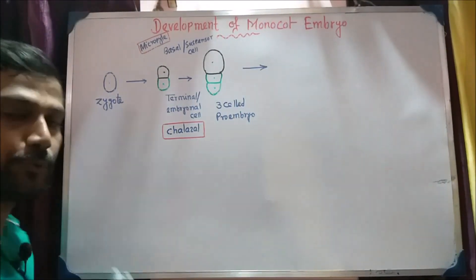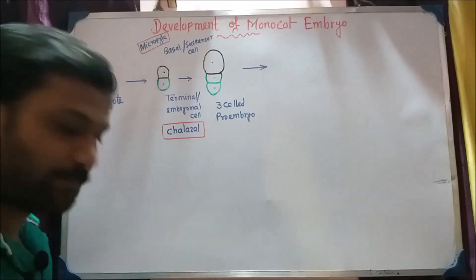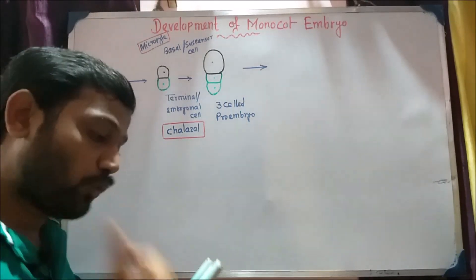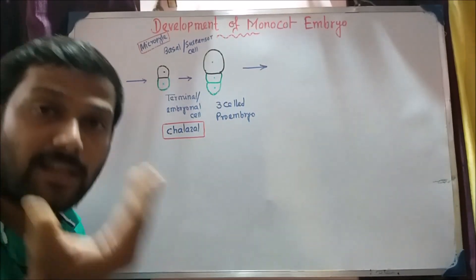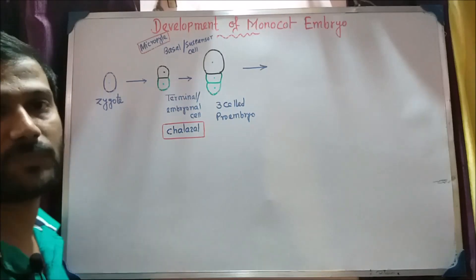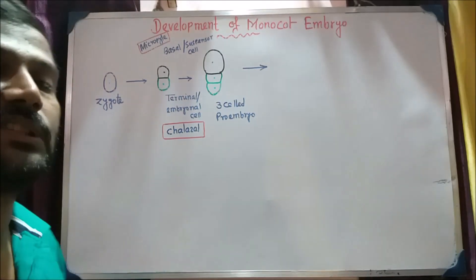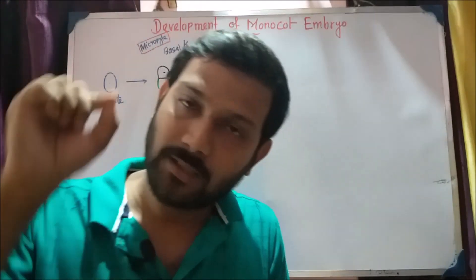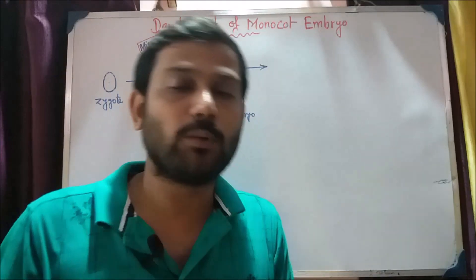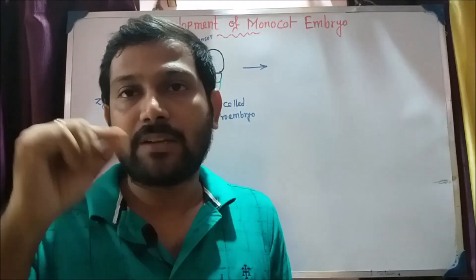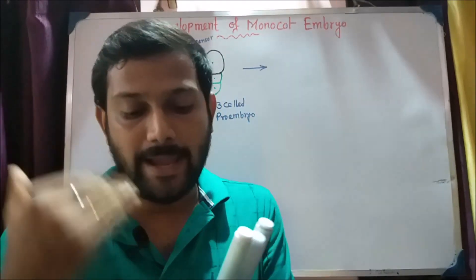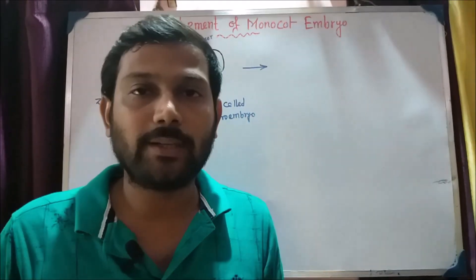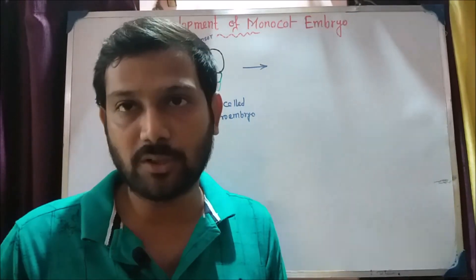The first one is a zygote. The zygote is in a very favorable condition in the first place. This is a very favorable condition.